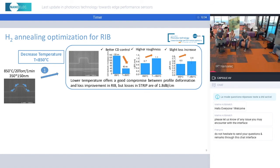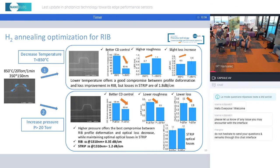Another way to get a good compromise would be to increase the pressure. You have here the profile of the waveguide after this treatment using higher pressure. We can indeed limit the RIB reflow.